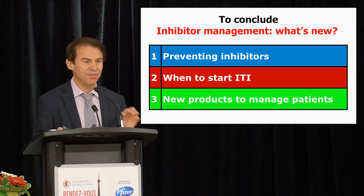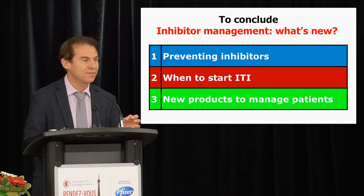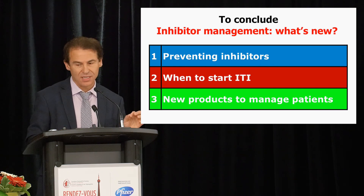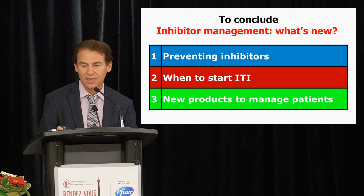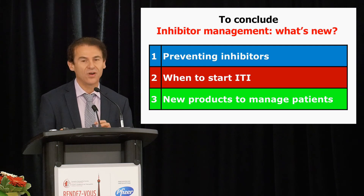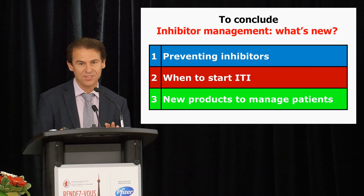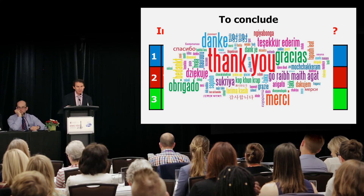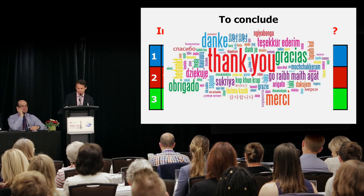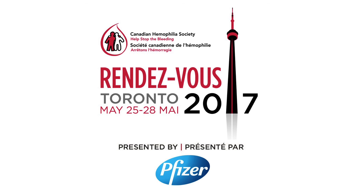To conclude: preventing inhibitors — are we further ahead? Not too much. When to start ITI — there is a transformation occurring, and it should occur in Canada as well. New products to manage inhibitor patients — there is a lot of stuff coming and we're going to have to figure out how to use them. Thank you for your attention.